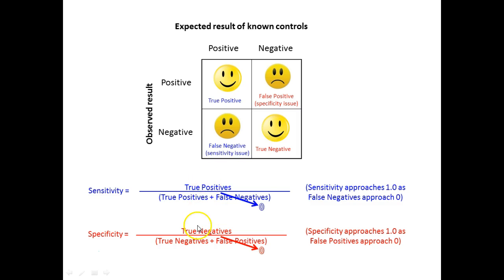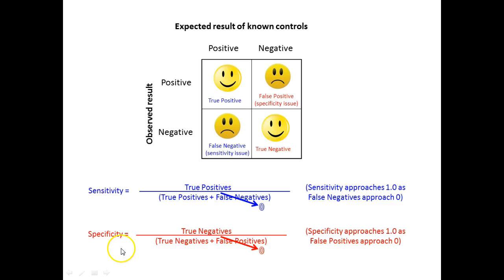The formulas in your book have a typo — the second one has a 4 instead of an equal sign. If we take true positives over true positives, as false negatives go to zero, and true negatives over true negatives as false positives go to zero, we end up with values of 1 — that's what we want. We want the lowest number possible of false results to have the greatest sensitivity and specificity of those tests.